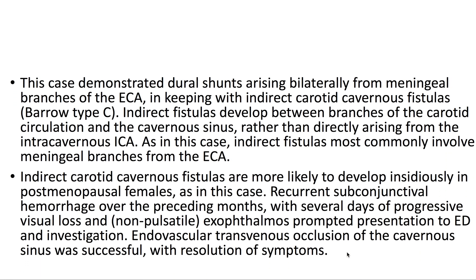This case demonstrated dural shunts arising bilaterally from meningeal branches of the ECA, in keeping with indirect carotid cavernous fistulas. Indirect fistulas develop between branches of the carotid circulation and the cavernous sinus, rather than directly arising from the intra-cavernous ICA. As in this case, indirect fistulas most commonly involve meningeal branches from the ICA.